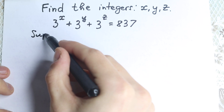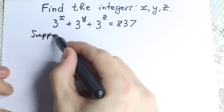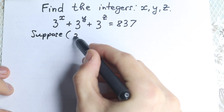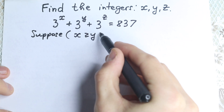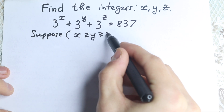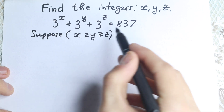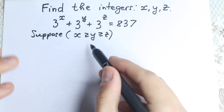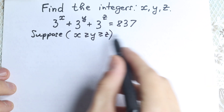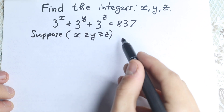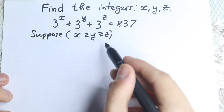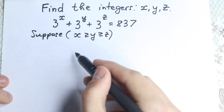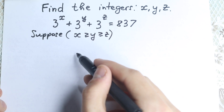Let's suppose that x is greater than or equal to y, and y is greater than or equal to z. This is our supposition in the beginning, so we'll find all solutions. And then let's factor from this expression — let's factor 3 to the power z.